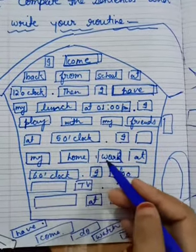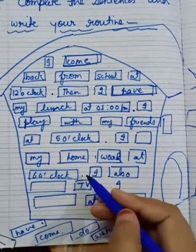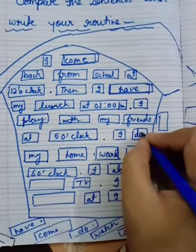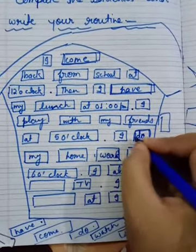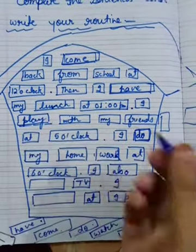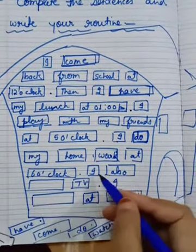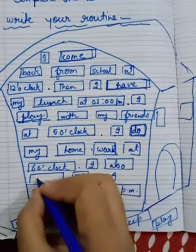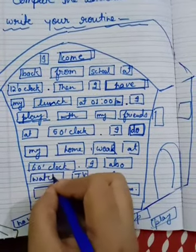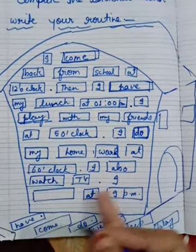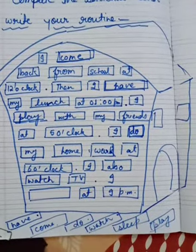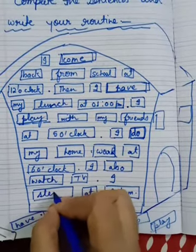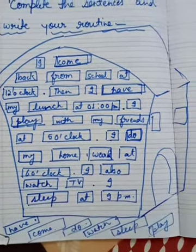'I ___ my homework at 6 o'clock' — I do my homework. 'I also ___ TV' — I also watch TV. Play is also an action word. 'I ___ at 9 p.m.' — so I sleep at 9 p.m.